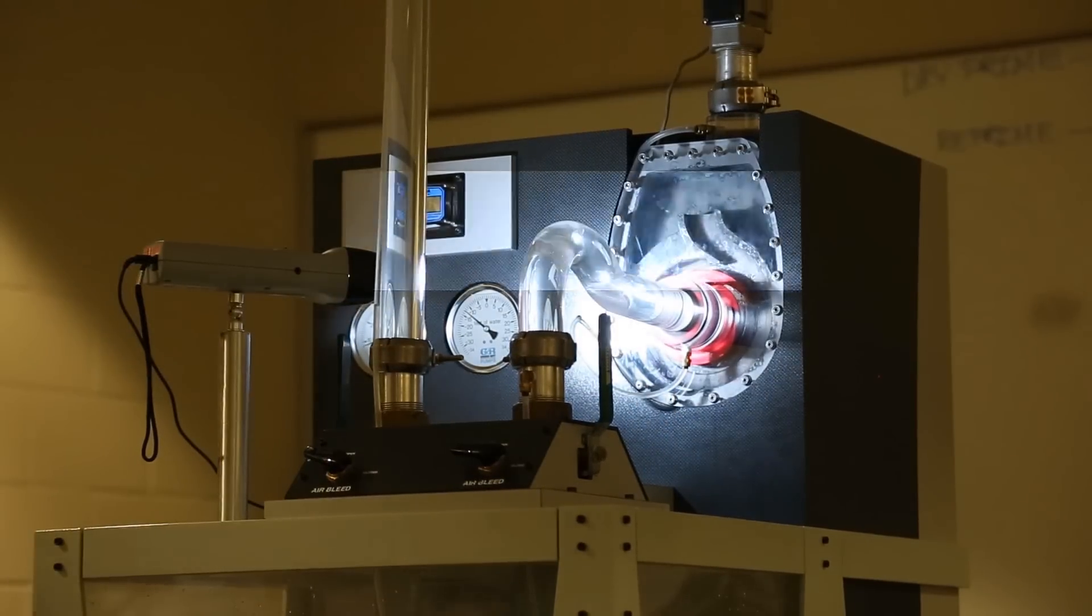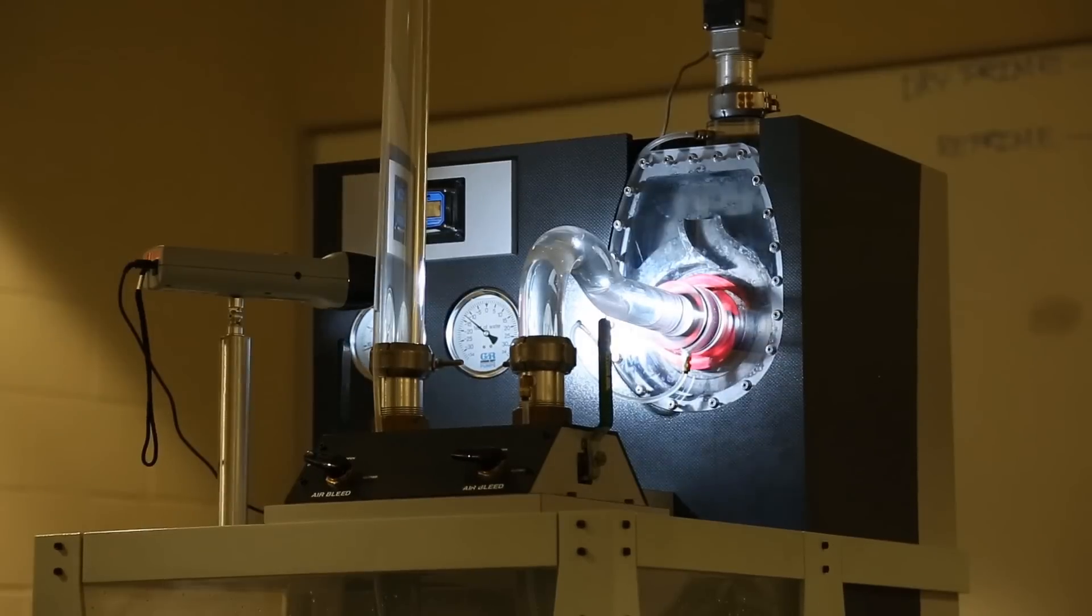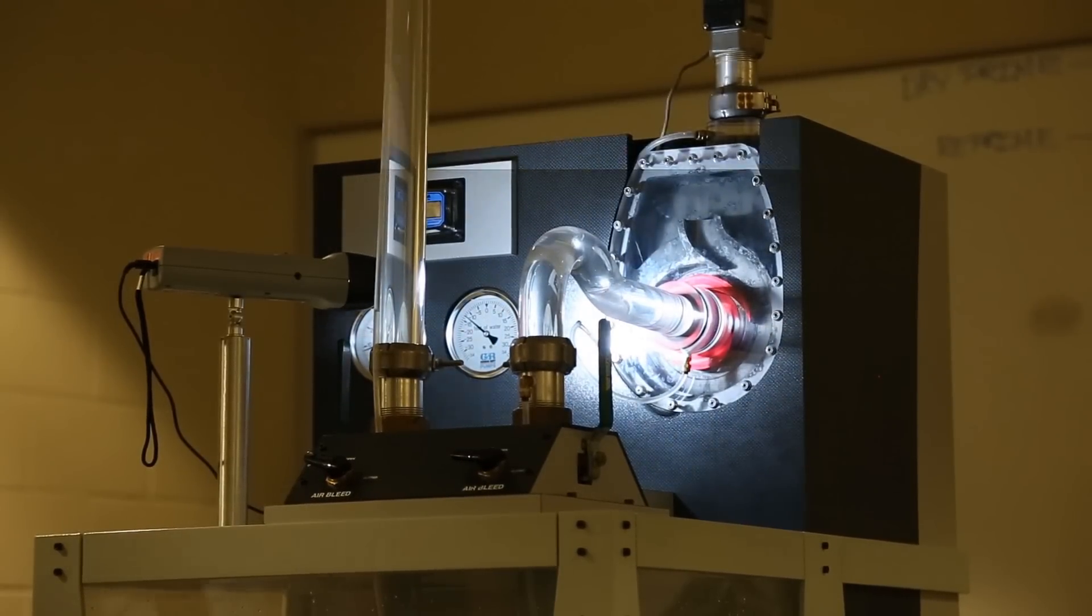You get an impeller where the tips of the impeller look fine. There's nothing wrong with the tips at all. But if you look in there at the eye, you've got little chunks of metal blowing away at the eye.